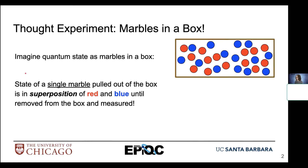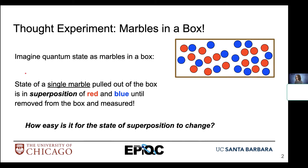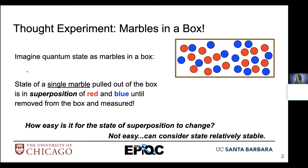We have a relatively stable state with these marbles sitting inside the box. How easy is it for the state of superposition to change? The superposition has a particular probability associated with the likelihood of observing one state over another. That's relatively fixed in this thought experiment because the box is closed. So it's not easy for our state to change — it will maintain a relatively stable state, and our likelihood of observing either a red or blue marble will be consistent.